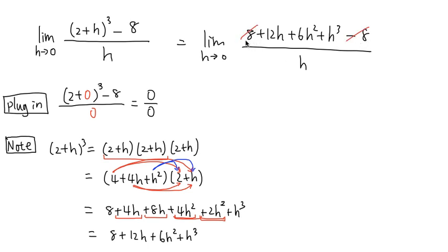And once we get rid of the 8 minus 8, we notice that this is 12h plus 6h squared plus h to the 3rd power. They all have an h. So I can factor out an h. And I will end up with, inside, we will have 12 plus 6h, and then plus h squared. So this h goes out.